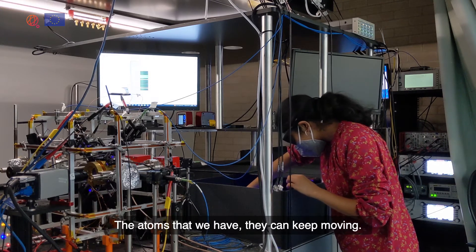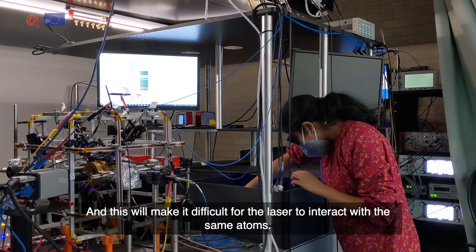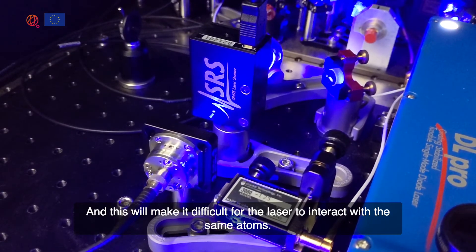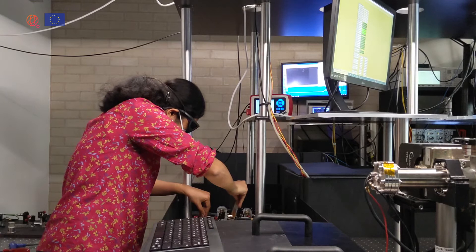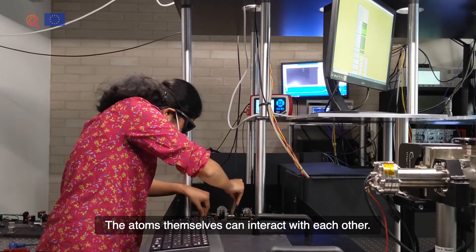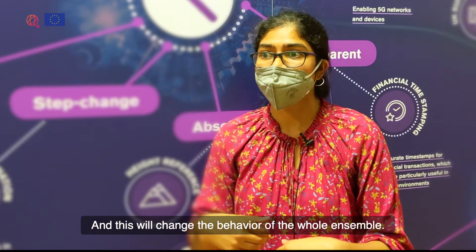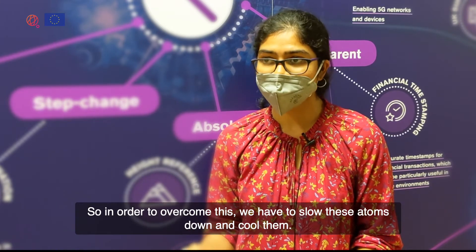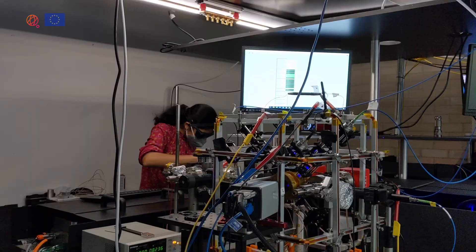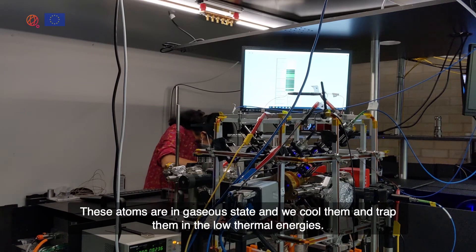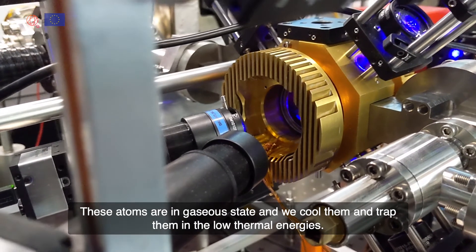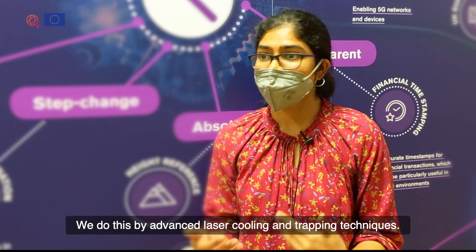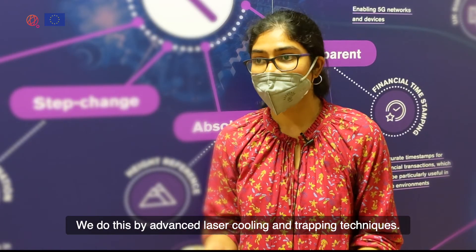The atoms that we have can keep moving, and this makes it difficult for the laser to interact with the same atoms. The atoms can also interact with each other and this will change the behaviour of the whole ensemble. In order to overcome this, we have to slow these atoms down and cool them. These atoms are in gaseous state and we cool them and trap them at low thermal energies. We do this by advanced laser cooling and trapping techniques, and we actually cool down these atoms to the ranges of micro Kelvin.